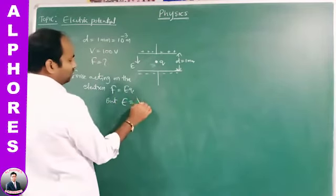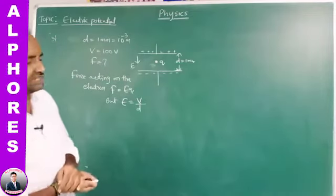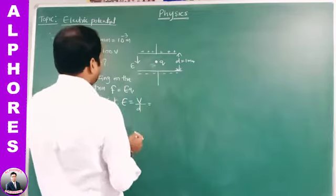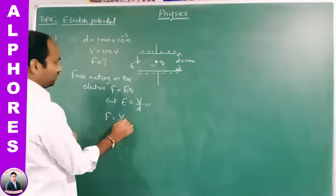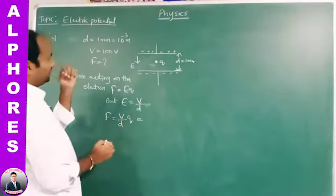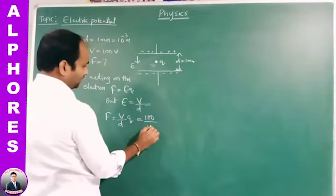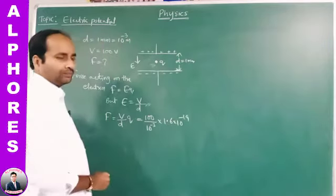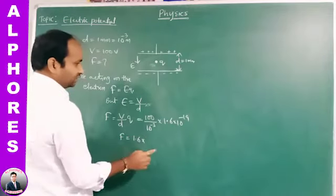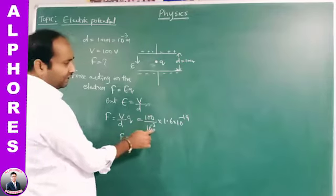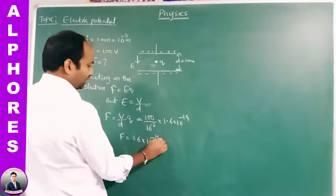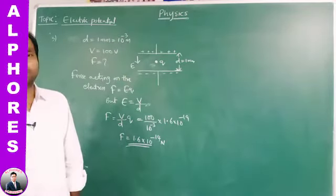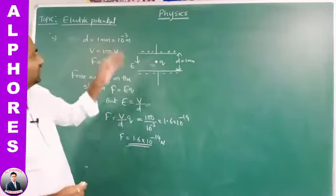We use F = EQ, and since E = V/d, we get F = (V/d) × Q = (100 / 10⁻³) × 1.6 × 10⁻¹⁹ = 1.6 × 10⁻¹⁴ newtons. This is the force on the electron placed between two plates separated by 1 mm with a potential difference of 100 volts.